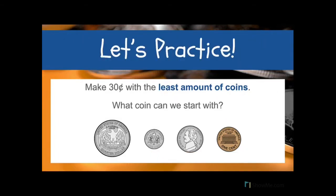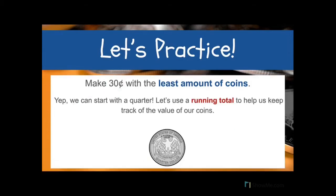So let's practice. Let's make 30 cents with the least amount of coins. Can we start with a quarter, a dime, a nickel, or a penny? Well let's start with our coin of the largest value. We've got a quarter and that's worth 25. Is 25 less than 30? Yes, so we can start with a quarter. Let's use a running total to help us keep track. So above my quarter, I'm going to write 25.